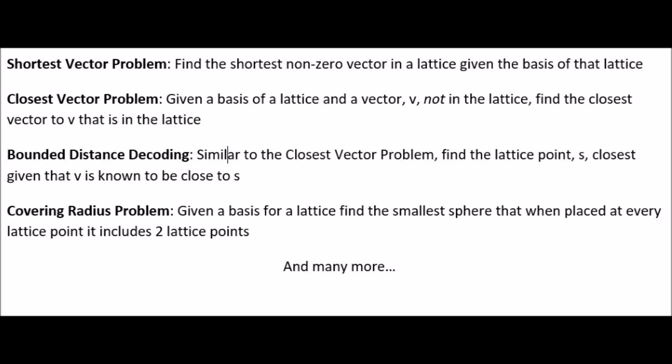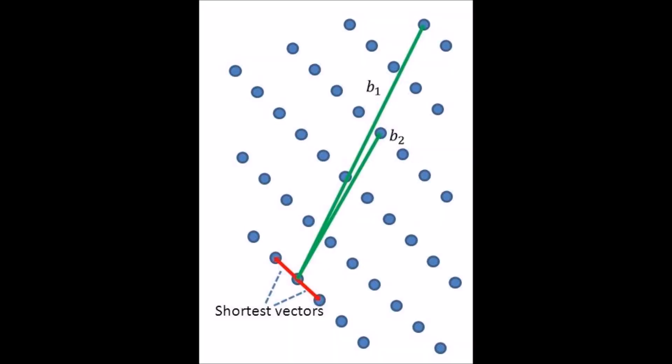For example, the most famous problem with lattices is to find the shortest vector in a given lattice. For the example that we just worked, this wouldn't be too hard, but when working with vectors with 500 entries it's actually quite difficult, and finding an exact answer takes exponential time.